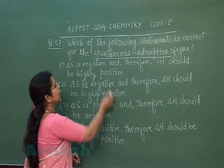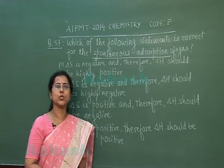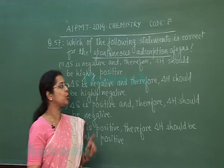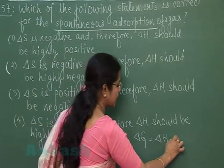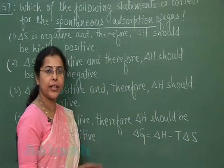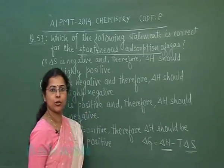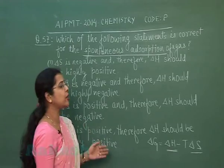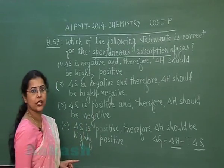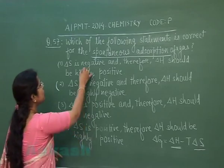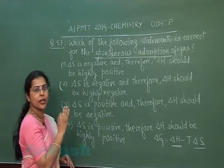In this question, adsorption is a spontaneous process, so ΔG must be negative. Since ΔG depends on both ΔH and ΔS, we must consider the sign of both. For adsorption of a gas, entropy always decreases, so ΔS is negative. This means the correct option is either 1 or 2 — we need to check ΔH.